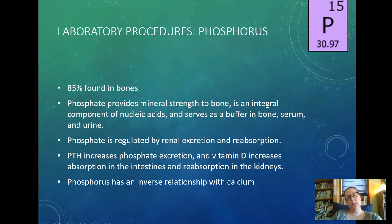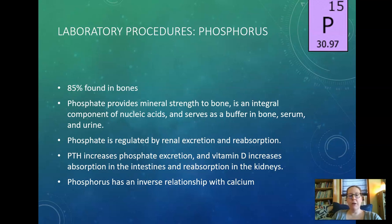Phosphorus: 85% is found in bones. Phosphate strengthens bone when combined with calcium and is an integral component of nucleic acids — it's the sugar phosphate backbone of your DNA and RNA. It also serves as a buffer in bone, serum, and urine. Phosphorus is regulated by renal excretion and reabsorption — kidney disorders can cause phosphate level issues. Parathyroid hormone increases phosphate excretion, while vitamin D increases phosphate absorption in the intestines and reabsorption in the kidneys.